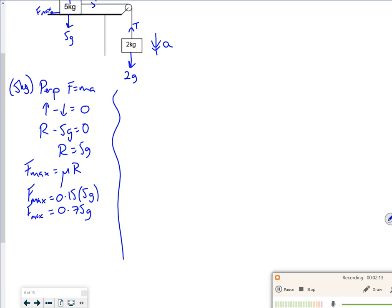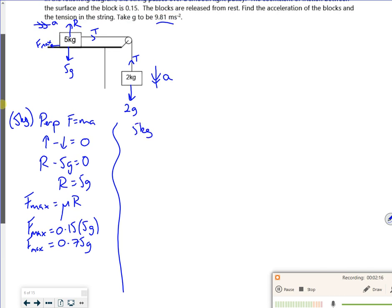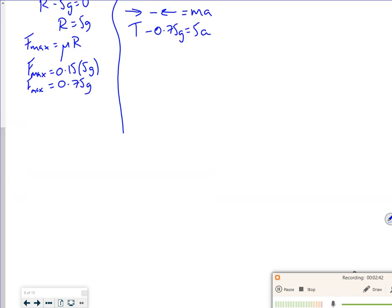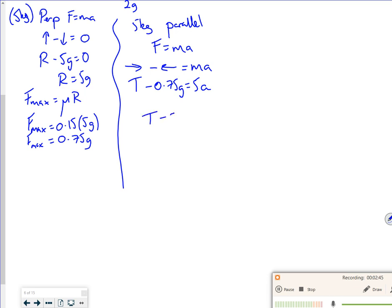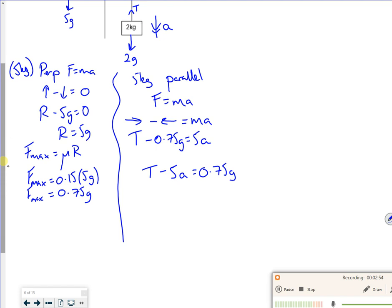Right, so let's have a look at each mass independently then. So the 5kg mass parallel, so I'm going to do F equals ma, so the force in the direction I travel minus the force opposing it is the mass times acceleration. So the only force pulling it is the tension. The Fmax is opposing it, which is 0.75g, and that's equal to a mass of 5 times by acceleration. So if I do a slight rearrange, I've got T minus 5a is equal to 0.75g. So I'm setting up simultaneous equations now to make this work.